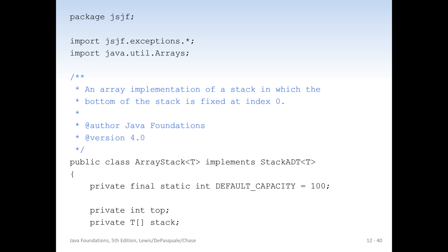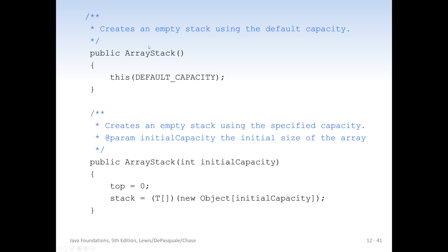Here is our code — an array implementation of a stack in which the bottom is fixed at index zero. We have public class ArrayStack, it's generic, and it implements StackADT. The abstract data type is the pure conceptual version of the data type, separated from the implementation — StackADT is the conceptual stack, and ArrayStack is an implementation of it using an array. We'll see other, better ways to implement stacks using other data structures in the next chapter. We set the default capacity to 100, we have a private int top, and our stack array.